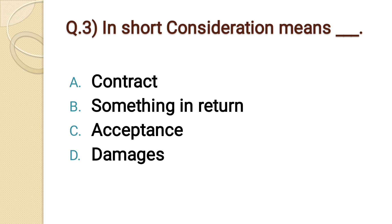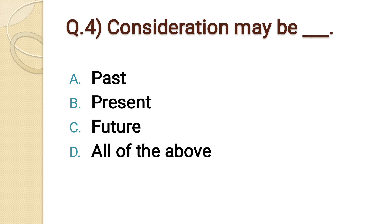Question number three: In short, consideration means dash dash. Option A: contract. Option B: something in return. Option C: acceptance. Option D: damages. The correct option is option B: something in return.